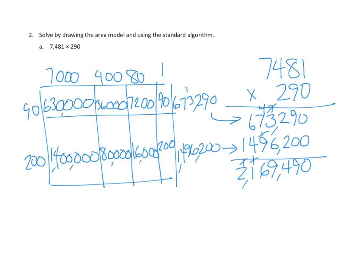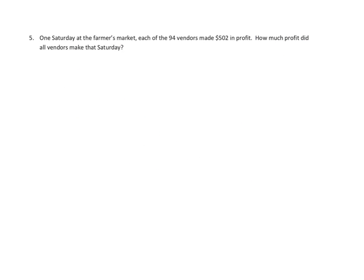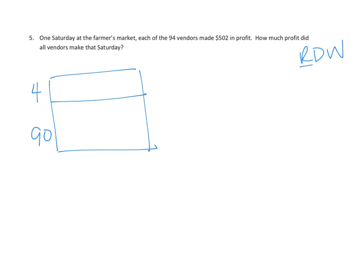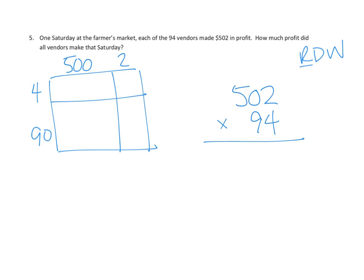Let's take a look at Problem Number 5. We're going to use a read, draw, and write strategy for our story problems. Let's read: 'One Saturday at the farmer's market, each of the 94 vendors made $502 in profit. How much profit did all vendors make that Saturday?' So we'd set up an area model with 94 vendors times $502 — but we don't have any tens in 502, so we'd have 500 and 2 on one side. I'm going to solve this as a standard algorithm problem: $502 times 94 vendors.